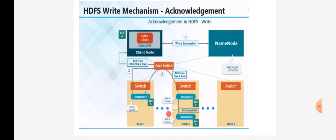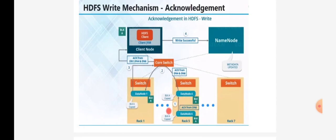Data node 4 receives the acknowledgement from DN6 and also confirms it has copied block A with no problems, sending its own acknowledgement back as well. Both acknowledgements move on to data node 1. Data node 1 then replies that it has also copied block A with no issues, and forwards the acknowledgements of DN4, DN6, and DN1 to the core switch. Through the core switch, all three acknowledgements reach the client node, confirming that data was written successfully with no issues. The name node is then updated to reflect that the storage space has been captured.